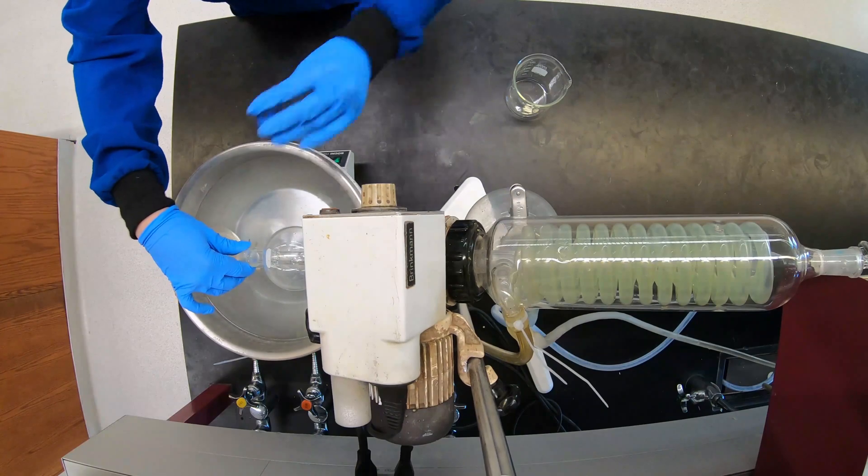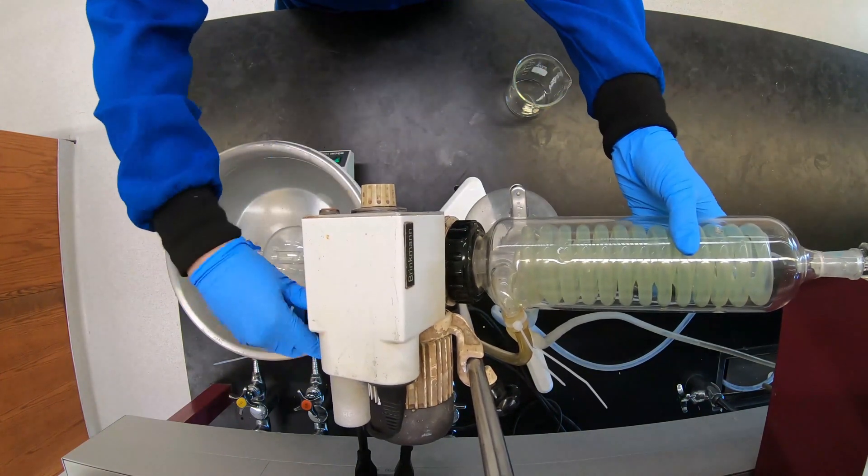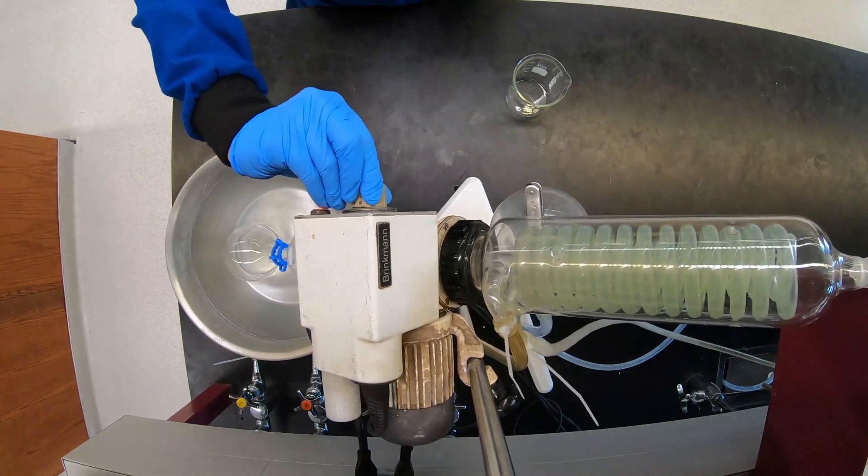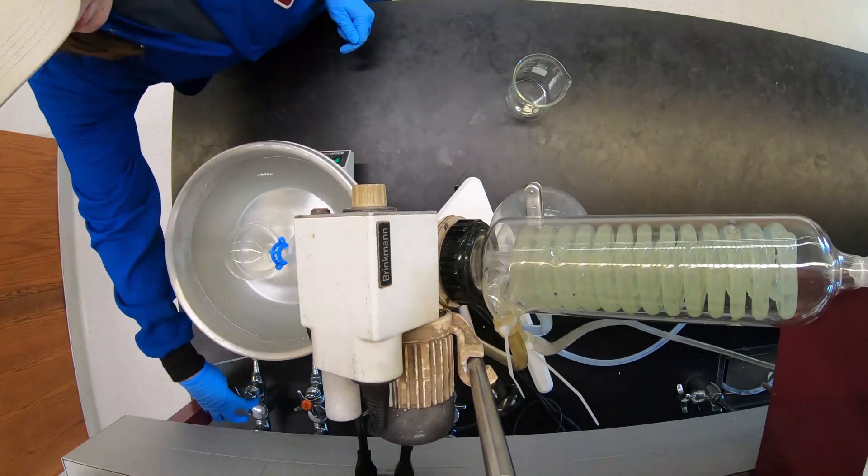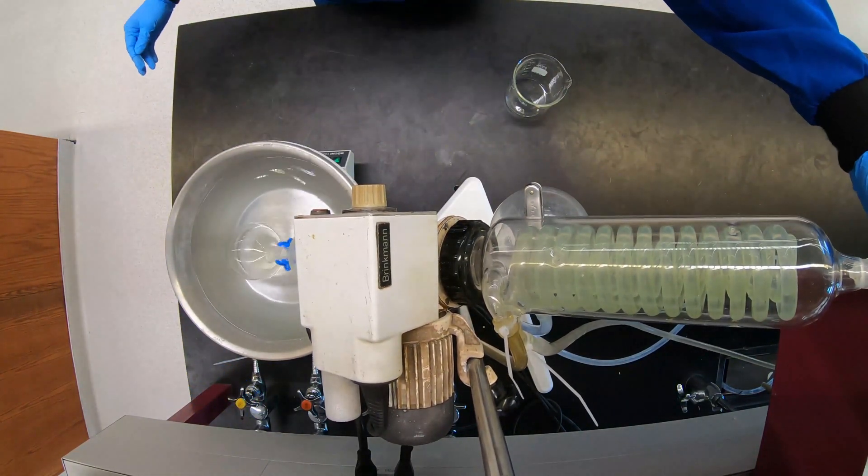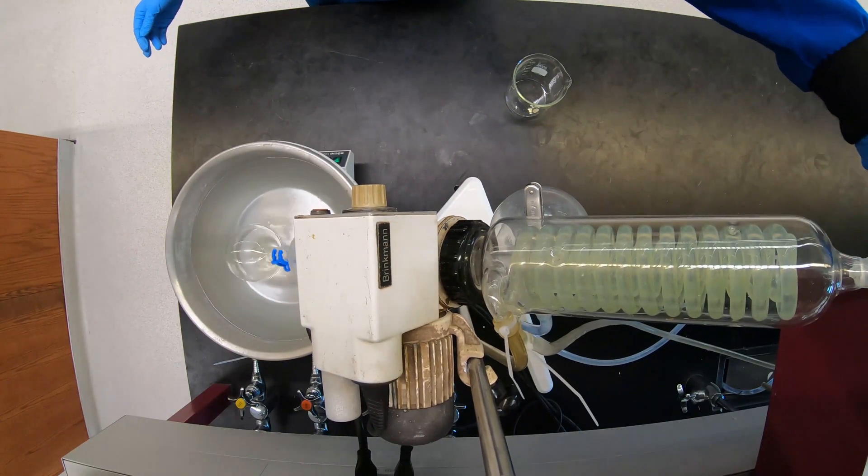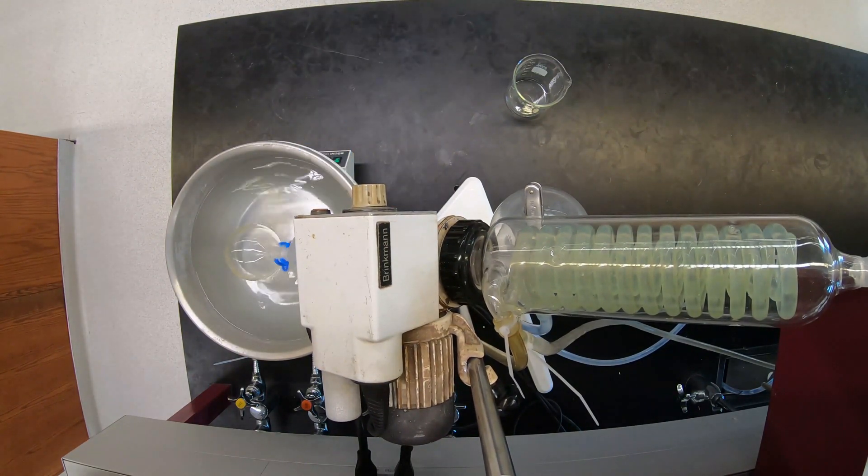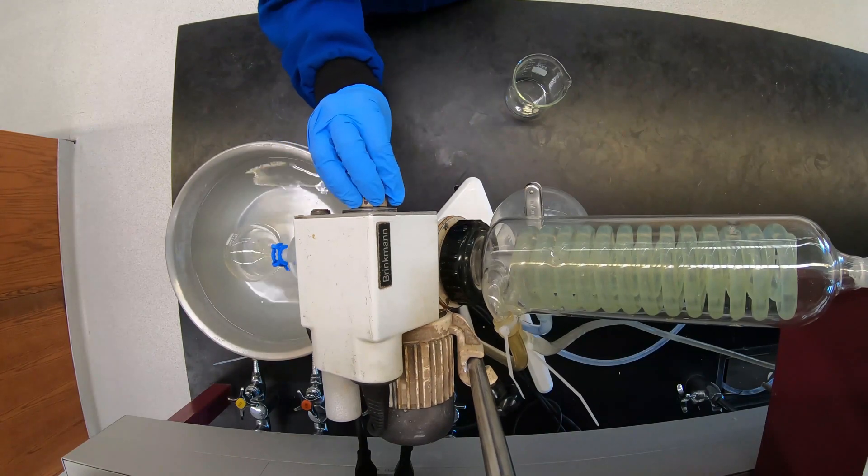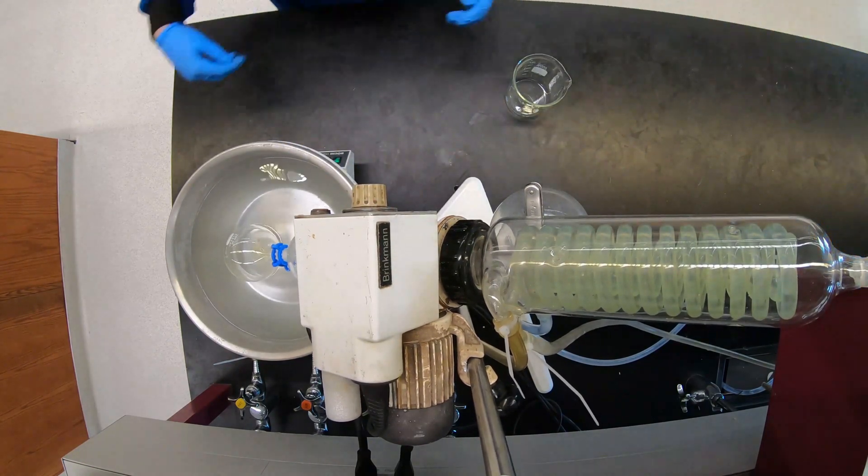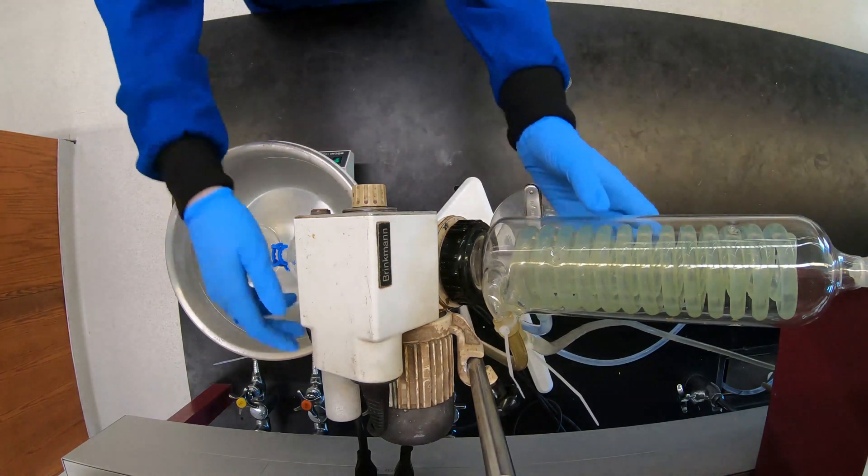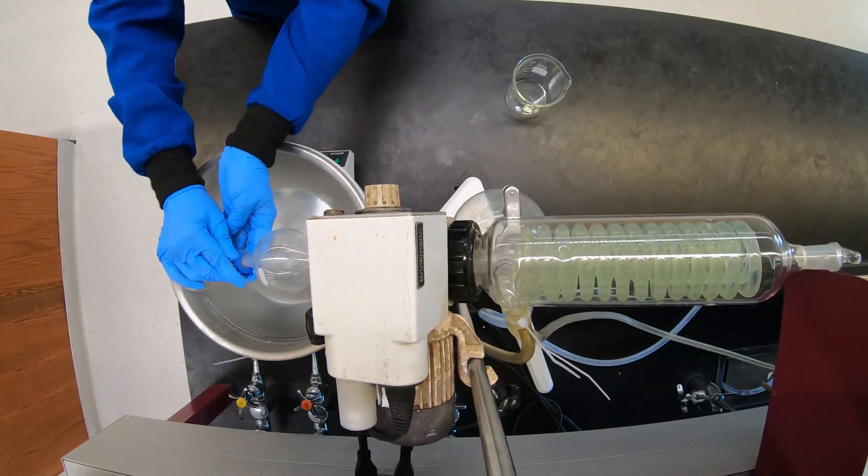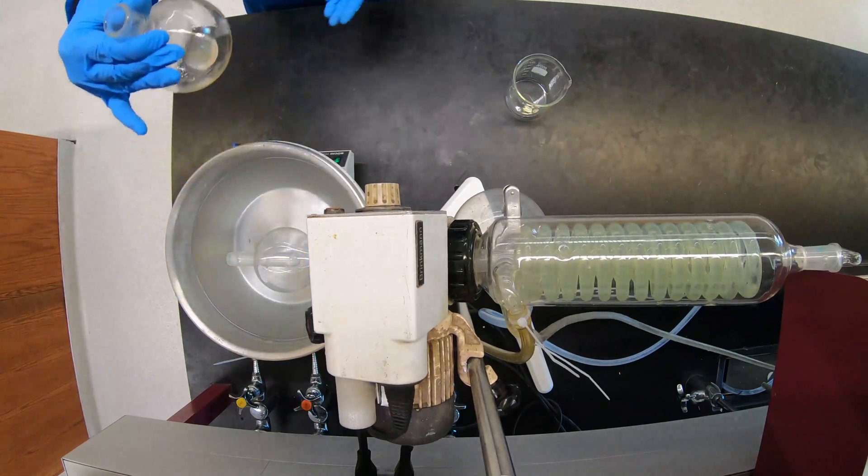To do this, we're going to attach our round bottom flask and twist the joint. Clamp with your keck clamp. Check that the venting stopcock is open. Turn on the vacuum until you can hear it. Turn on the rotation and then close the vent line by twisting the stopcock. Once the ether is removed, you'll vent the system, turn off the rotation, and then turn off the vacuum. You're expecting your crude DEET product to be an oily residue. Store your crude product in your drawer until next week when you'll purify your product by column chromatography.